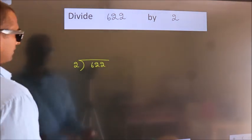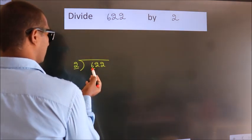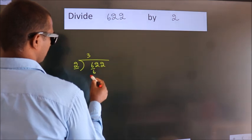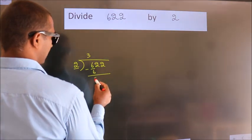Here we have 6. Here 2. When do we get 6 in the 2 table? 2 times 3 is 6. Now we should subtract. We get 0.